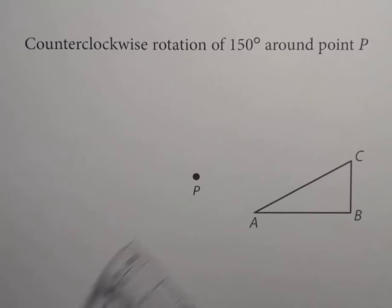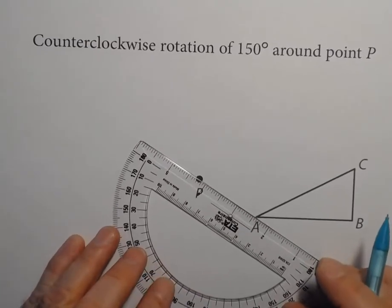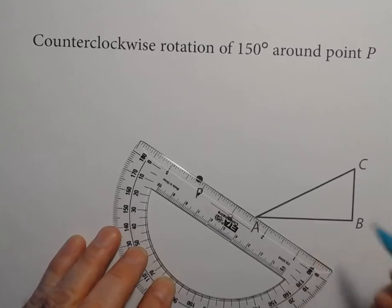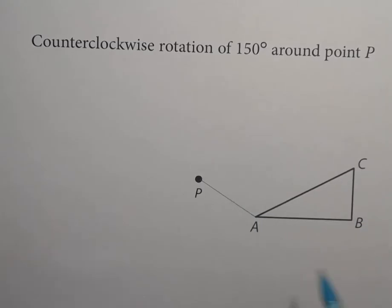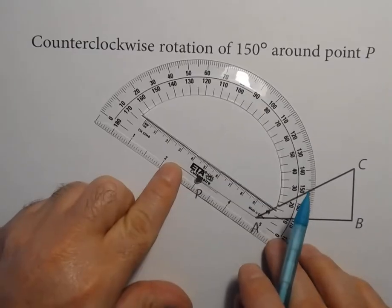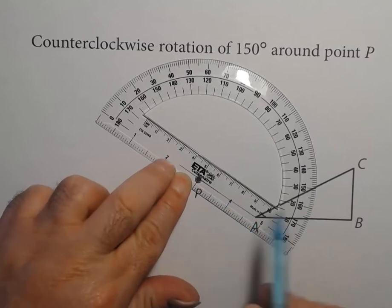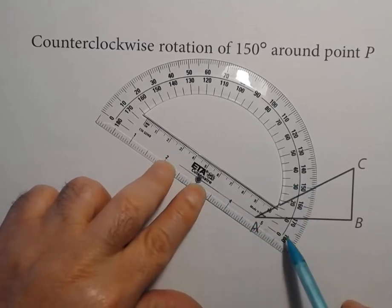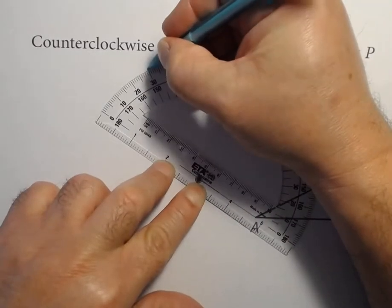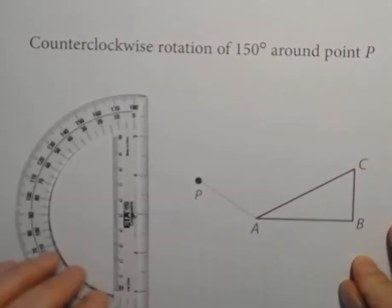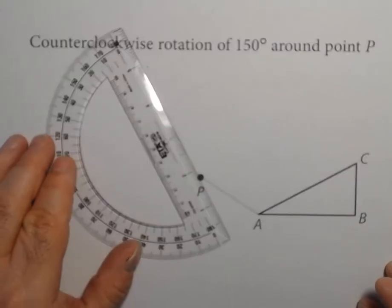We're going to start with point A. We're going to connect point P to point A and draw a line segment. Next, I want to line up my vertex with point P and the baseline with A, and I want to mark off where 150 degrees is. We're on this side, so zero at the bottom — here's 150. I'm going to mark a small point there and draw a line connecting point P to that point I just marked.